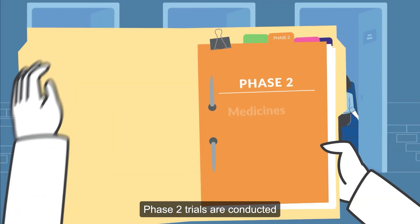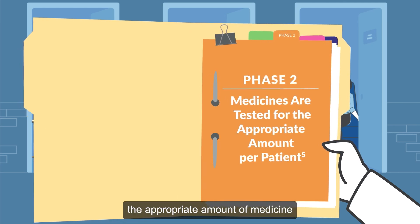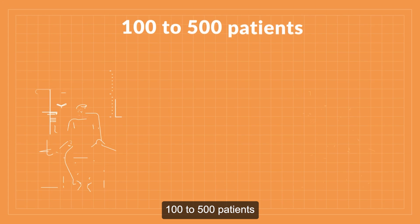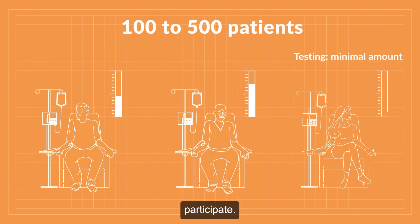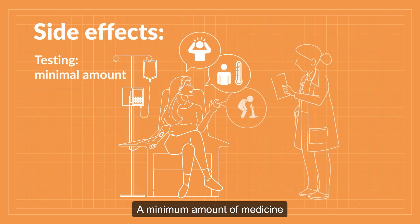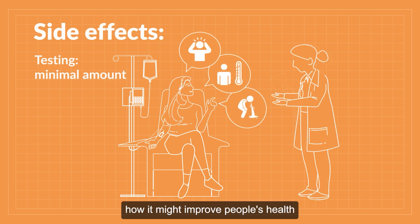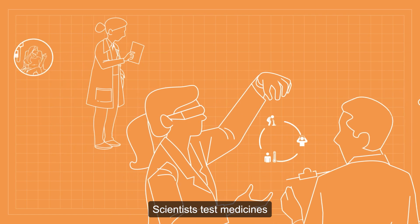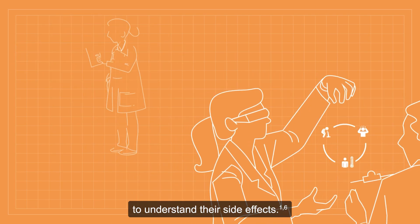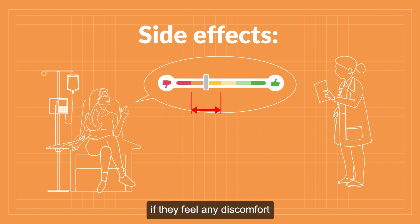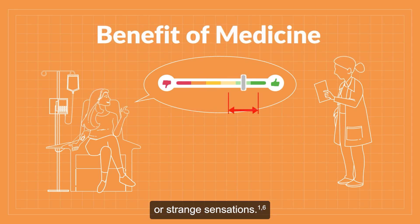Phase two trials are conducted to determine the appropriate amount of medicine for each type of patient. 100 to 500 patients participate. A minimum amount of medicine is also tested to discover how it might improve people's health and what side effects may happen. Scientists test medicines to understand their side effects. Patients should tell their doctors if they feel any discomfort or strange sensations.